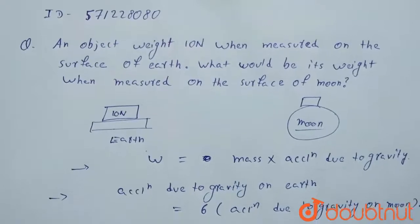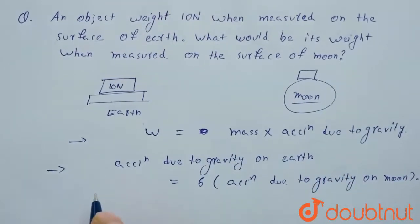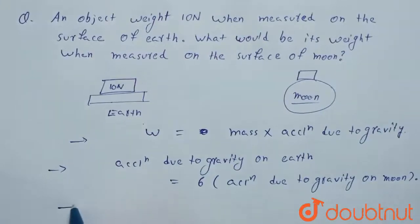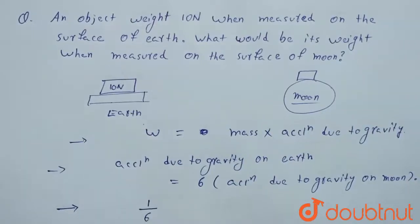So what we can conclude from this? That is weight of an object will become one by six times when it goes to moon from earth.